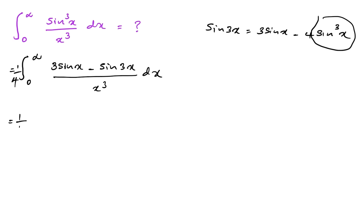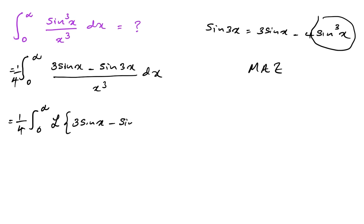Now I'm going to use the Mellin identity of Laplace transform — I discussed this in previous videos and will add links in the description. Applying this identity over 0 to infinity, we get the Laplace transform of (3 sin x minus sin 3x) times the inverse Laplace transform of 1 over x cubed. Since we have x cubed in the denominator, the inverse Laplace transform of 1 over x cubed gives us x squared over 2.